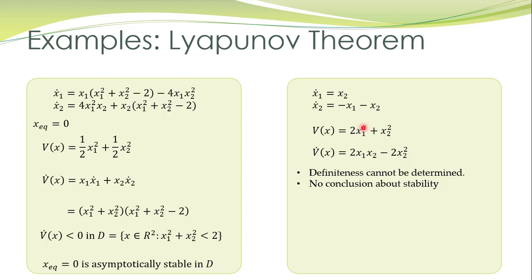Since this candidate Lyapunov function does not work, we try another one — this one is also obviously positive definite and is taken as a candidate Lyapunov function. We compute its derivative along system trajectories, and it comes out to be equal to minus 2*X2-squared. This is negative semi-definite. What is the conclusion? The equilibrium point is stable.